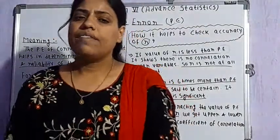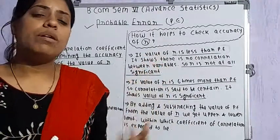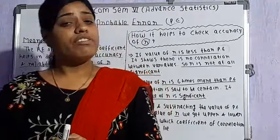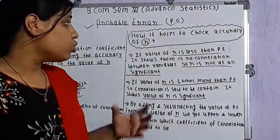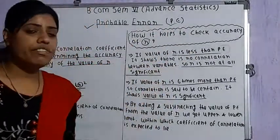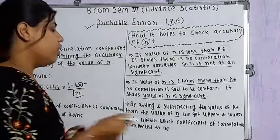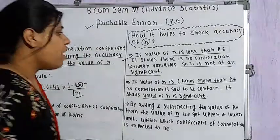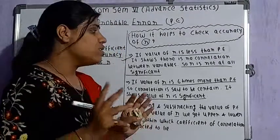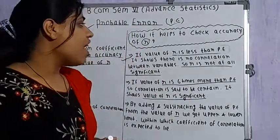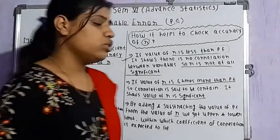Now the question that arises is: how does the value of probable error help us to check the accuracy of R? We will see different conditions for this. The first condition is: if the value of R is less than the probable error, it shows that there is no correlation between the variables — R is not at all significant. So if R is less than PE, it means there is no relationship between the given variables.